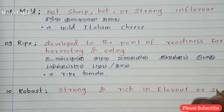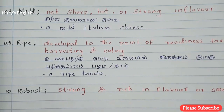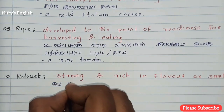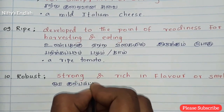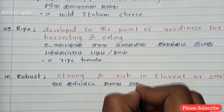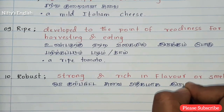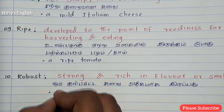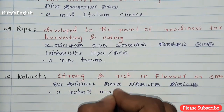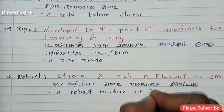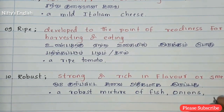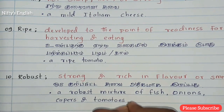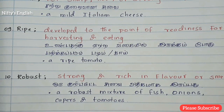Number ten is robust — meaning strong and rich in flavor or smell. In Tamil, robust means or kuripita suway adiha maharu padu. For example: a robust mixture of fish, onions, corpus, and tomatoes. Okay, that's it. Please subscribe and press the bell icon. Thank you.